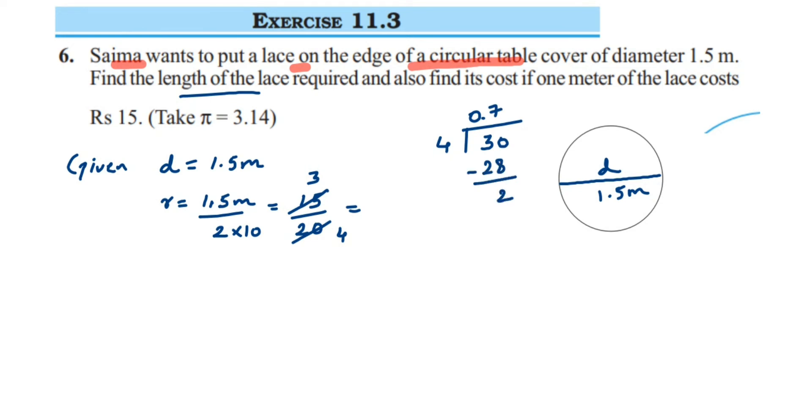Since I have taken a decimal point already, I'm going to put 0 here and 4 fives are 20. So we got the radius as 0.75 and the unit will be meter. So we got the radius.